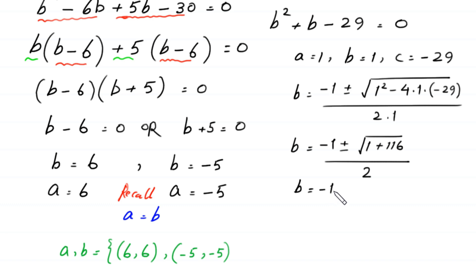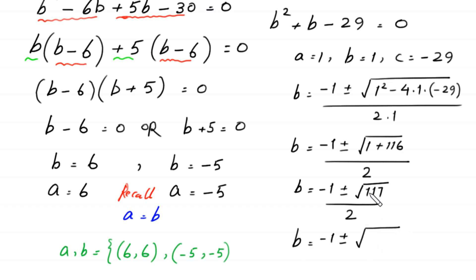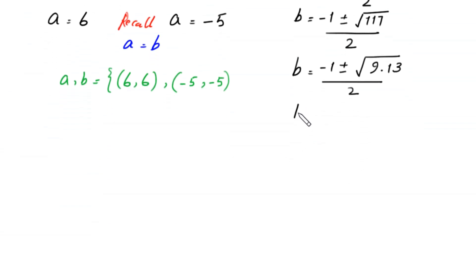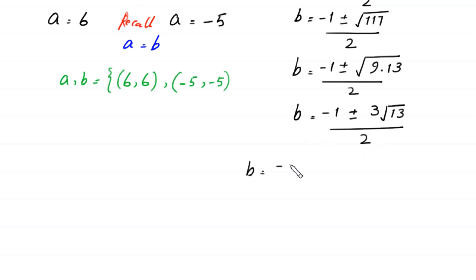Continuing: b equals negative 1 plus or minus square root of 117 over 2. We write 117 as 9 times 13, so square root of 117 equals 3 times square root of 13. Therefore b equals (negative 1 plus 3√13) over 2 or b equals (negative 1 minus 3√13) over 2.